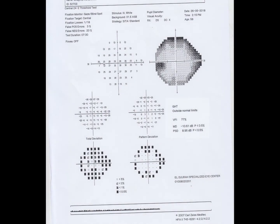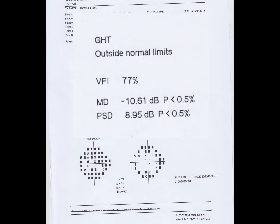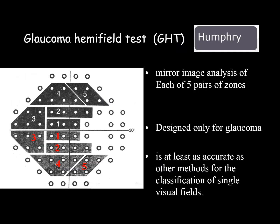The glaucoma hemifield test is written as 'outside normal limits' in this example. It is a way to compare mirror images of areas above the horizontal line with corresponding areas below the horizontal line — comparing zone 5 with zone 5, zone 3 with zone 3. This way it can detect changes even before the appearance of a scotoma.